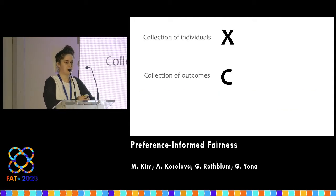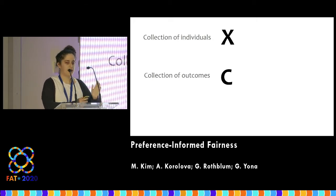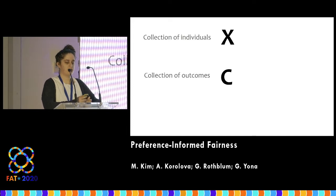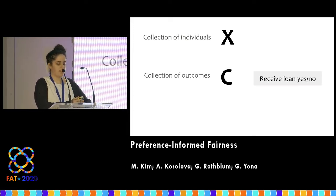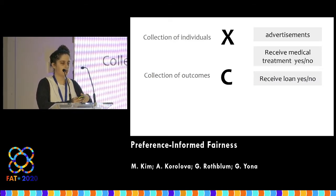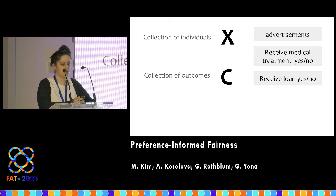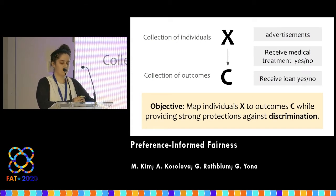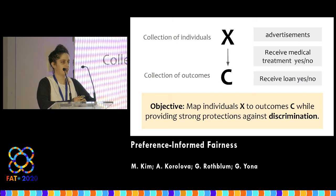Getting the clicker to work is obviously the hardest part. So I'll jump right into the setting. We have a collection of individuals that I'm going to call X, a collection of outcomes that I'm going to call C. You can think of this as binary classification — loan yes or no, medical treatment yes or no — but more generally as anything we want to allocate, like a collection of advertisements. Our objective is to map individuals to outcomes in a way that provides strong protections against discrimination.